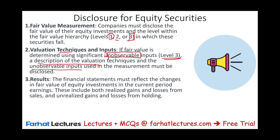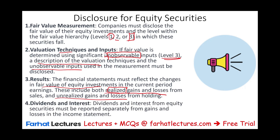The financial statements must also reflect changes in fair value of investments in current earnings — the effect of fair value changes on current earnings. This includes both realized gains and losses as well as unrealized gains and losses. If we sold the investment, it's realized, and we want to show this separately from unrealized gains and losses. Dividends from equity securities must be reported separately from gains and losses on the income statement — we have to show the dividend amount separately versus the gains and losses.